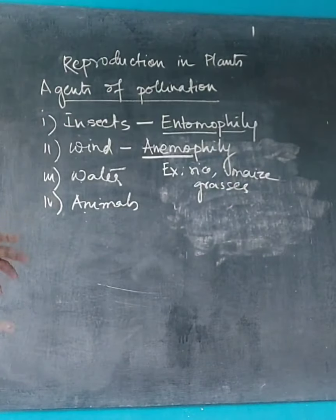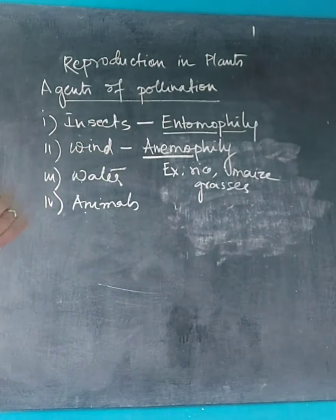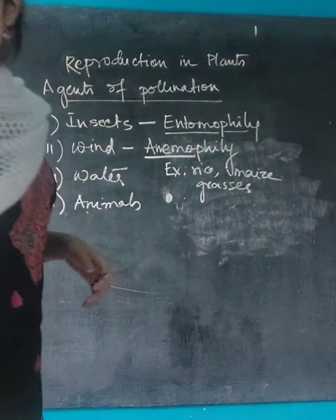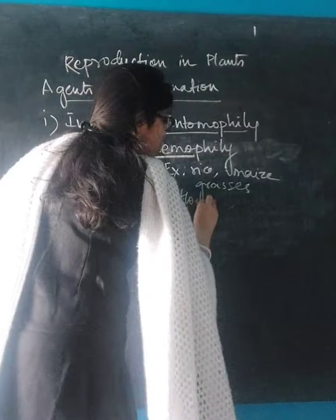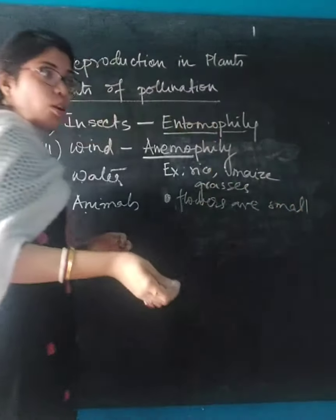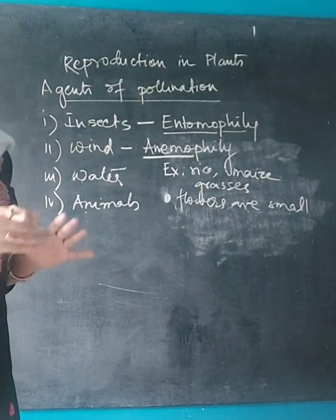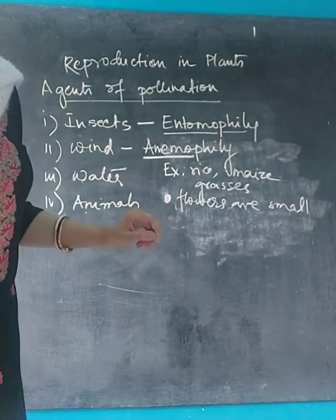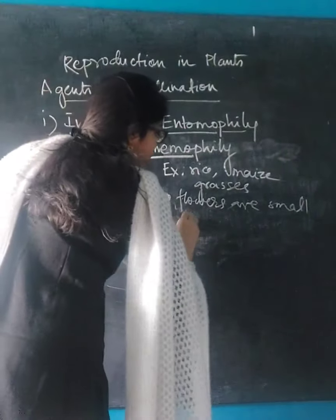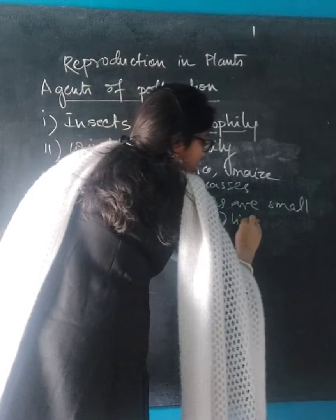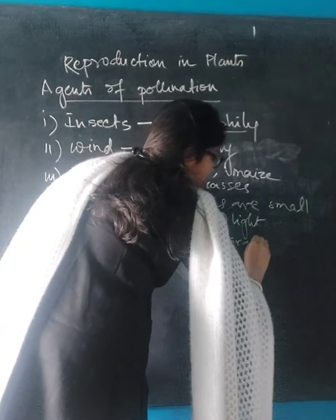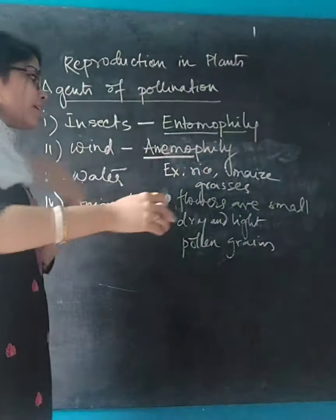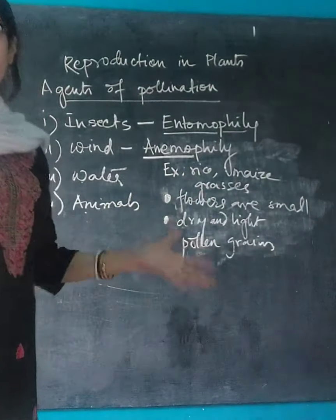These are examples where pollination with the help of wind takes place. Wind-pollinated flowers are small, and have dry and light pollen grains. If the flowers are small, their pollen grains will be smaller and lighter in weight, and lightweight substances are easily carried by wind. The pollen grains are also dry — if they were very sticky they would not be carried by wind easily. Light and small pollen grains are easier to be carried by wind.